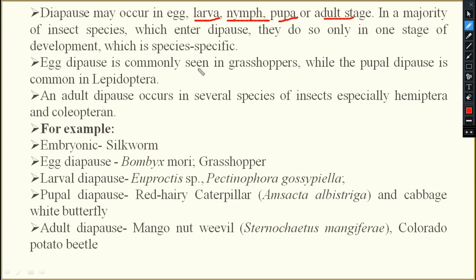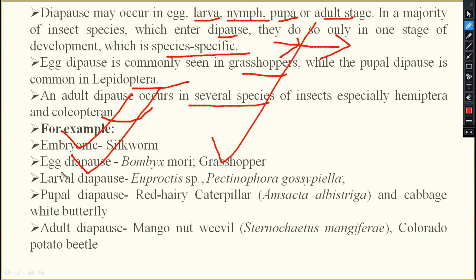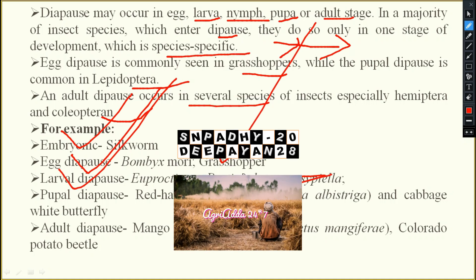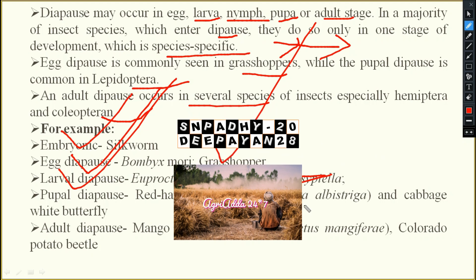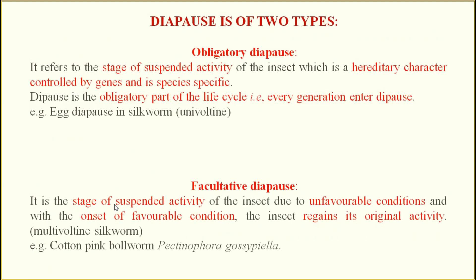In the majority of insect species that enter diapause, they do so only in one stage of development, which is species-specific. Egg diapause is commonly seen in grasshoppers, while pupal diapause is common in Lepidoptera, and adult diapause occurs in several hemimetabolous and coleopteran insects. Examples: embryonic and egg diapause — silkworm and grasshopper; larval diapause — pink bollworm (Pectinophora gossypiella); pupal diapause — red hairy caterpillar (Amsacta albistriga) and cabbage white butterfly; adult diapause — mango, Colorado potato beetle.